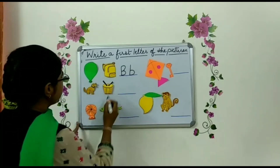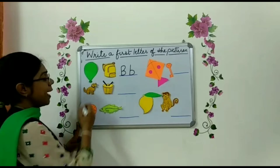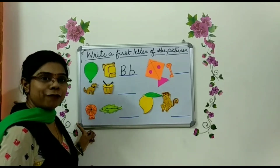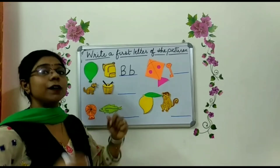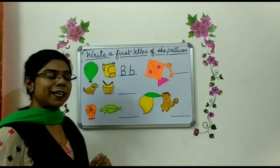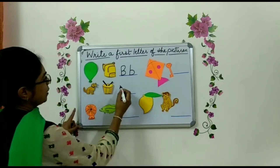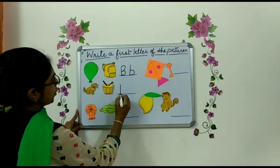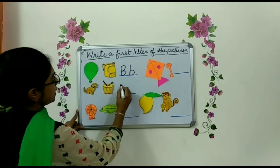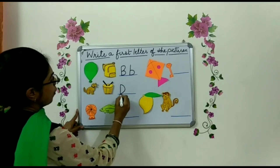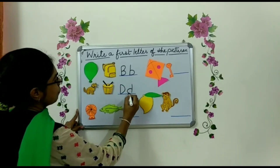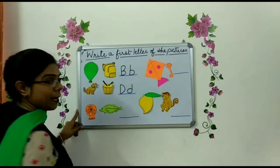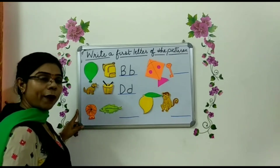Now what is this? Yes, this is D for dog and this is D for drum. So the first letter of the picture is D for dog and D for drum. Right, children?